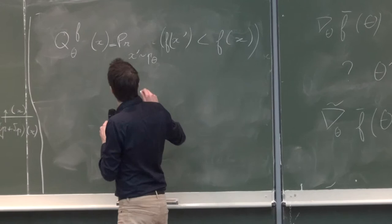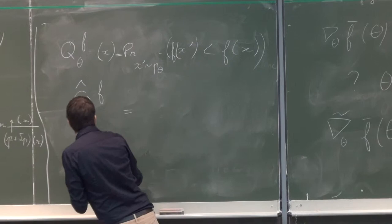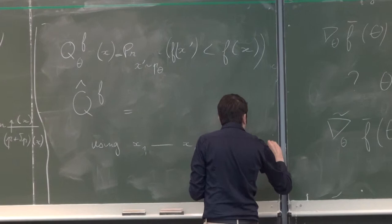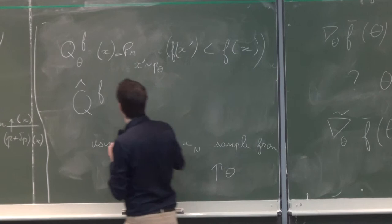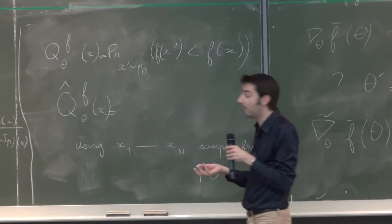Now the problem is to evaluate this in practice. So if you have a sample x1 to xn, sampled from p theta, from your current beliefs, you can approximate the quality of x by simply counting the proportion of points in your sample that are better or worse than x.